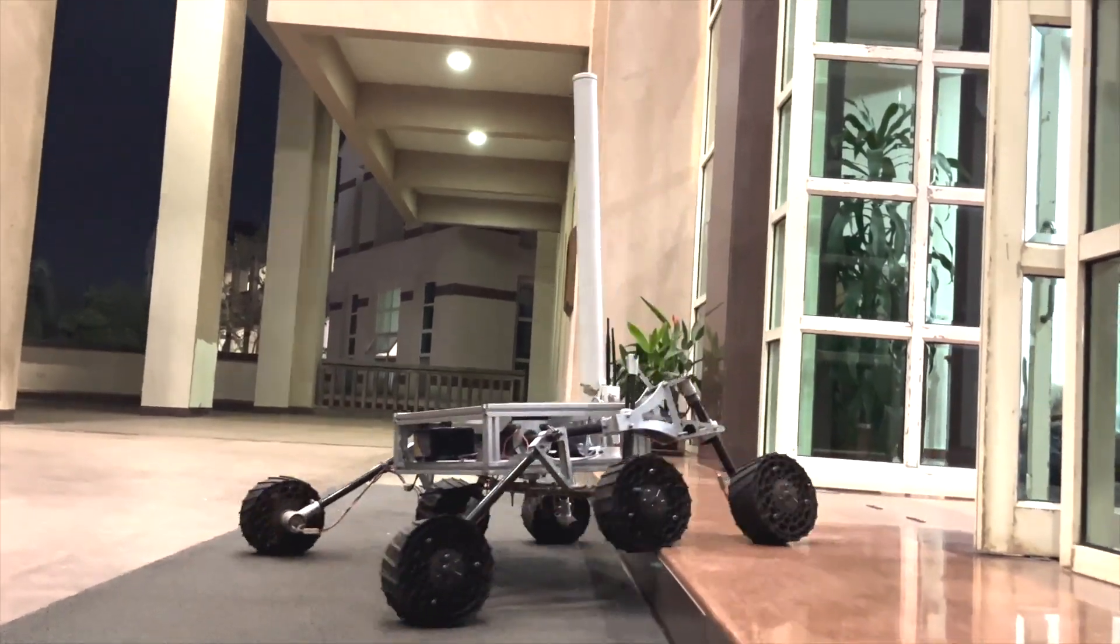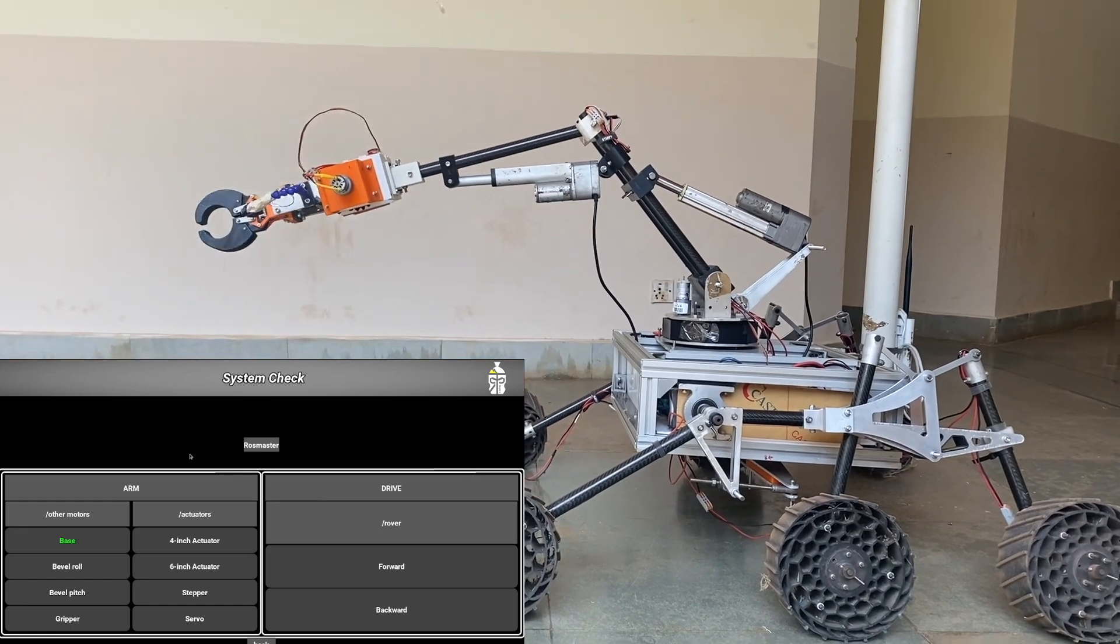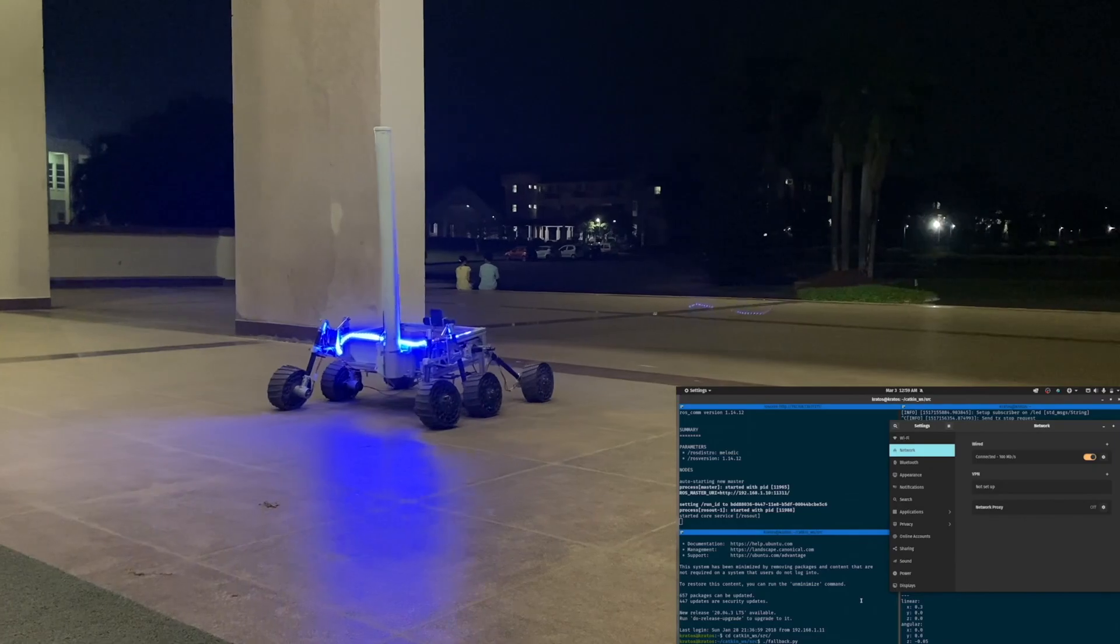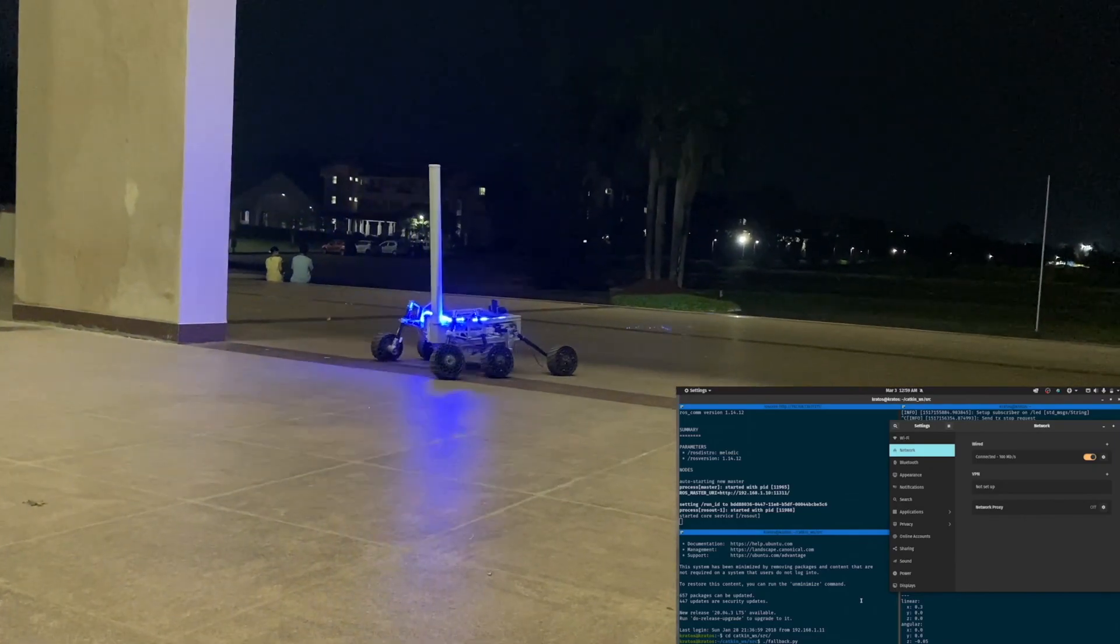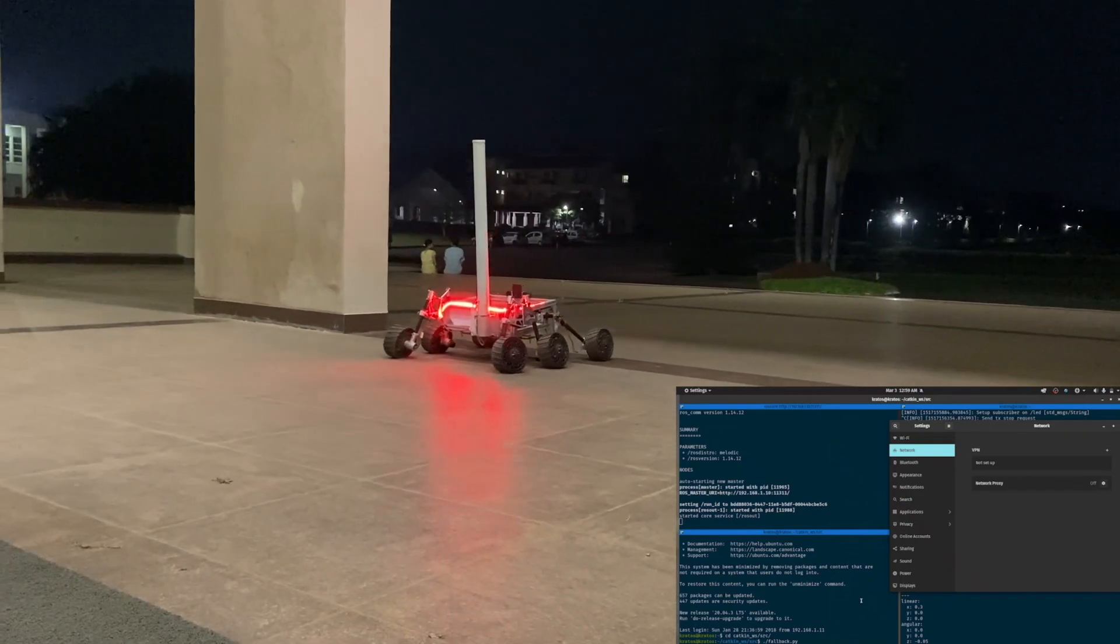The required wheel velocities are computed on the Jetson using a differential drive model. We have implemented a custom systems check algorithm to ensure rover readiness before every mission. In case of communication loss with the base station, the rover uses the stereo camera and GPS data to retrace its trajectory autonomously to reconnect.